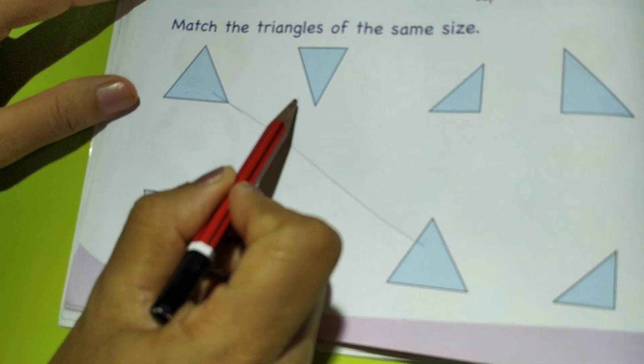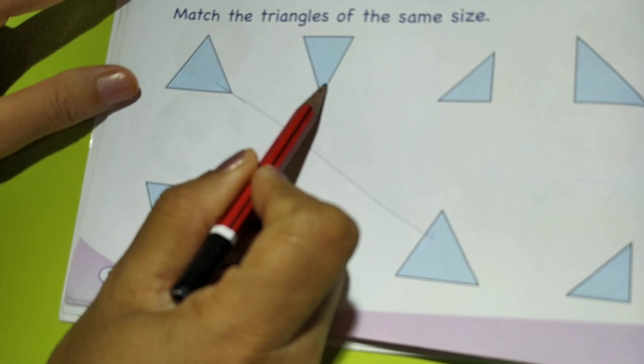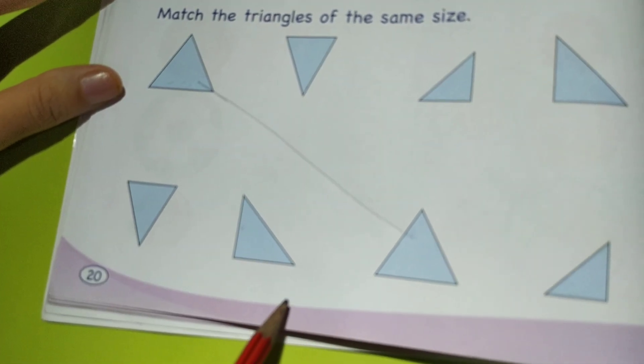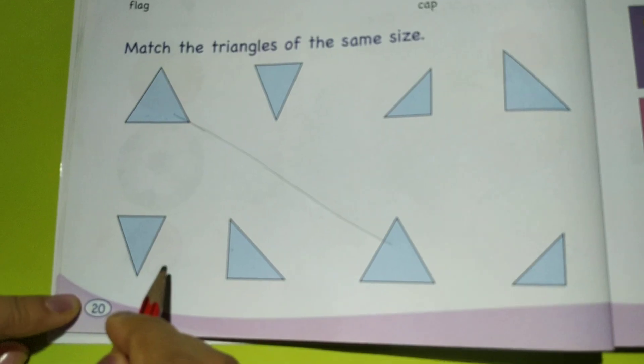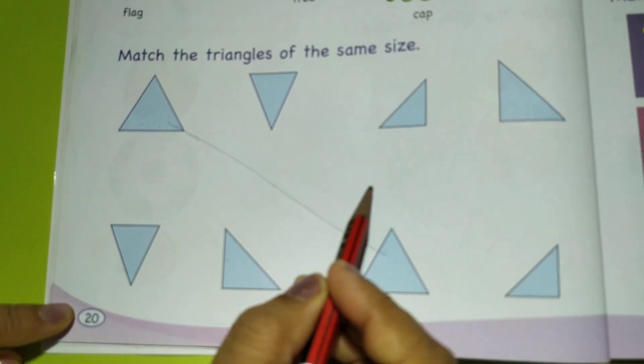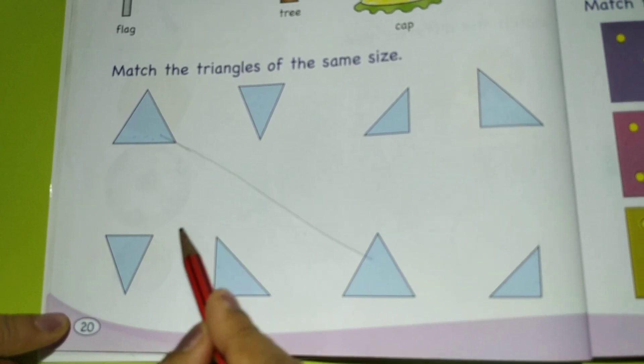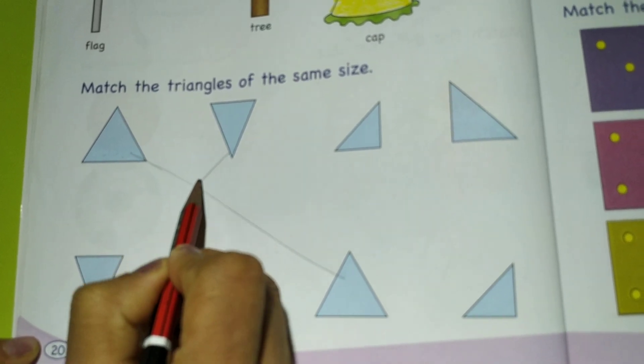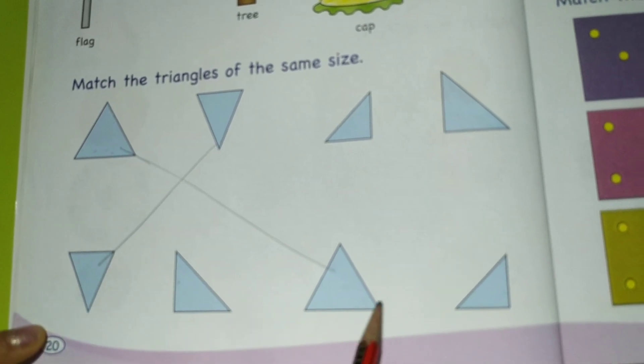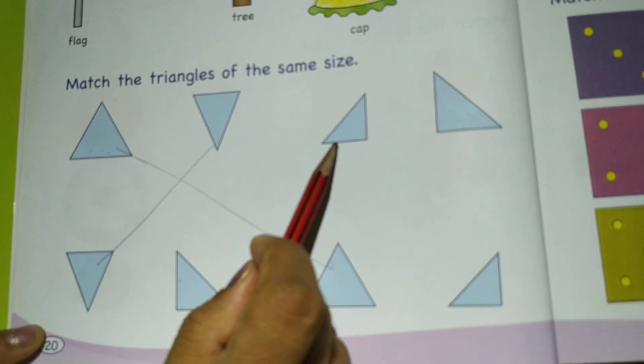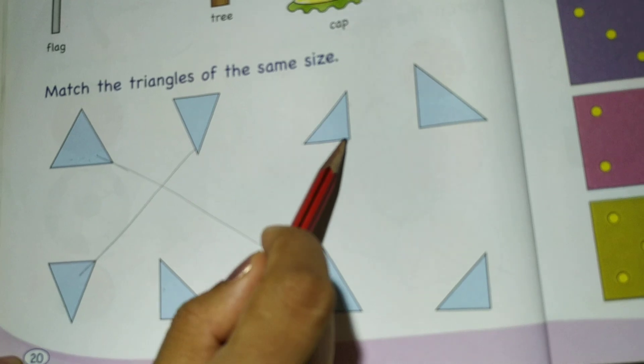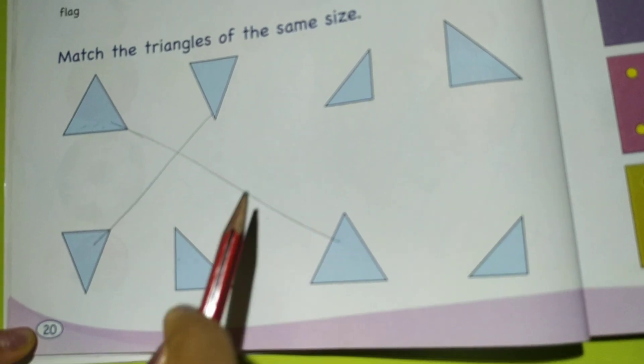Next is triangle this way, upside down. So you have to match it with these down below. This one goes with the first one. Now third triangle, three corners, this will go with—no, they are not of the same size, different size.